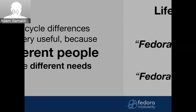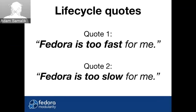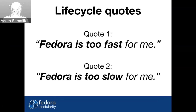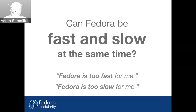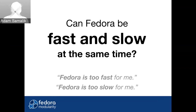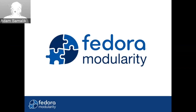But even within a single release, there are people who want different pieces to move at different times. These are real quotes I got at conferences: 'Fedora is too fast for me' or 'Fedora is too slow for me.' And it's always about some specific language runtime or application — a little piece within the distro. So the question is: can Fedora be fast and slow at the same time? And the answer is yes. That's what Fedora modularity does.